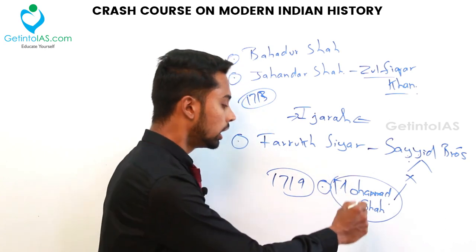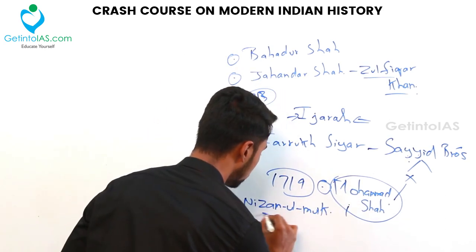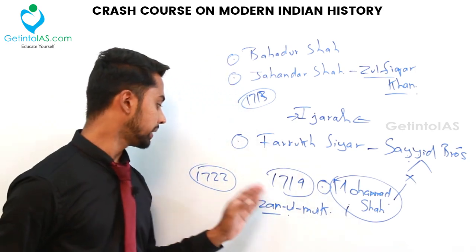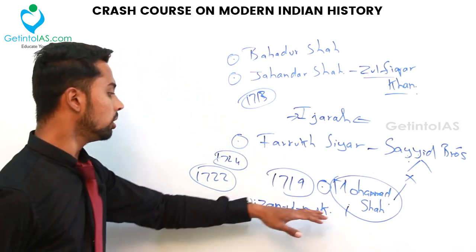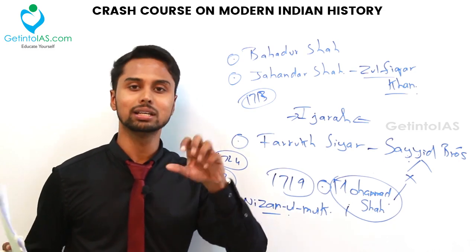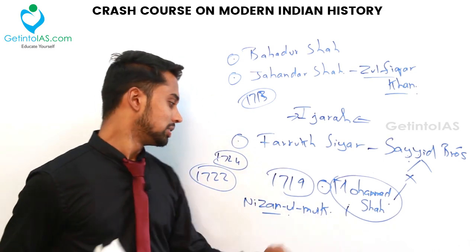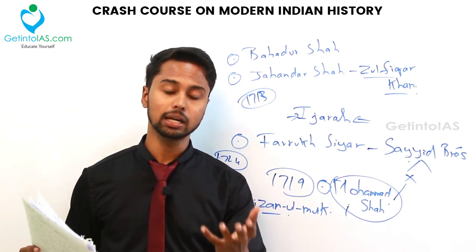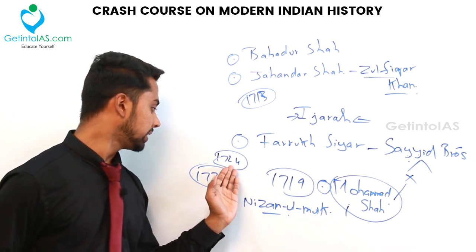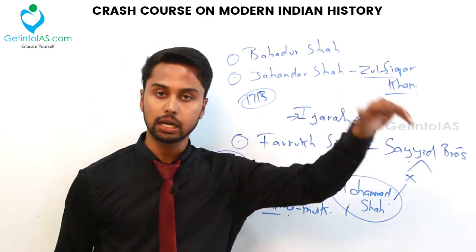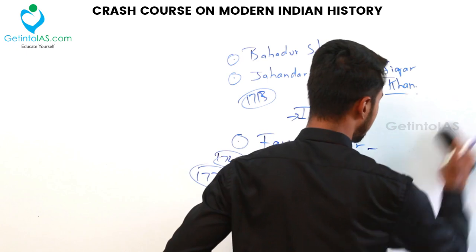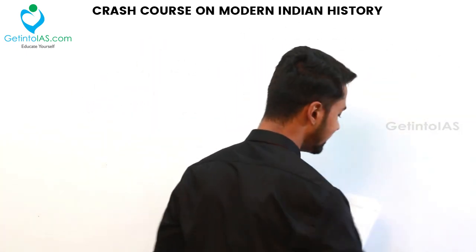Nizam ul-Mulk helped Muhammad Shah, and in 1722 Nizam ul-Mulk was made Wazir (Prime Minister). In 1724, Nizam ul-Mulk — a brave person who wanted the empire to develop — found that Muhammad Shah was not in the mood to reform and instead wanted to plunder the peasants. So Nizam ul-Mulk grew very frustrated and walked out of the Mughal court in 1724 to found the state of Hyderabad. This 1724 event marked the death knell of the Mughal Empire.